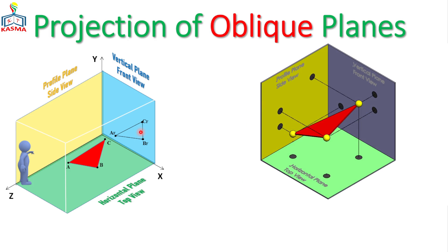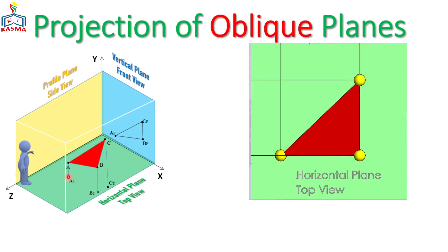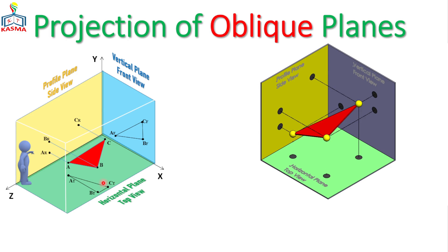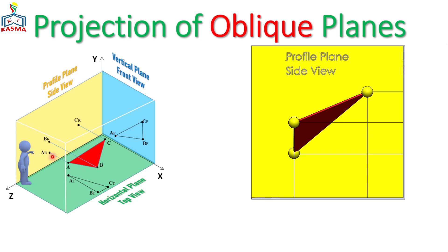On the top view, the plane is also projected, giving points AT, BT, and CT — the top views of points A, B, and C. Once connected, you get a foreshortened plane on the horizontal plane. For the right side view, each point is projected onto the profile plane, giving AR, BR, and CR. Connecting them produces the right side view plane, which is also a foreshortened projection of triangle ABC.